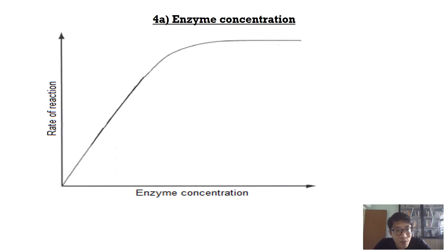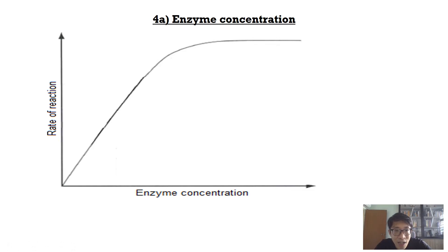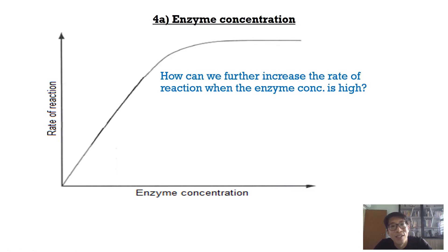If you plot a graph of the rate of reaction against increasing enzyme concentration, when enzyme concentration is low, increasing it increases the rate of reaction, as explained. When enzyme concentration is high, increasing it does not increase the rate of reaction — the rate of reaction remains constant. So the question is: at high enzyme concentration, when the rate of reaction remains constant, how can we further increase the rate of reaction?